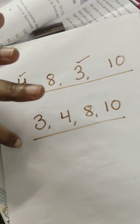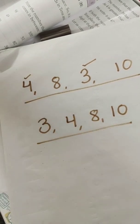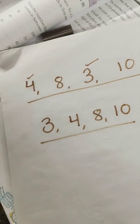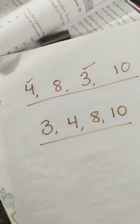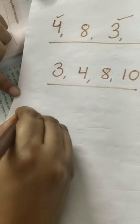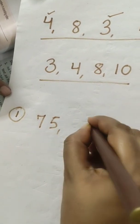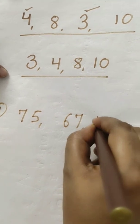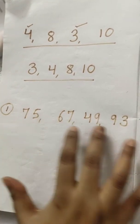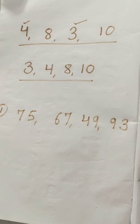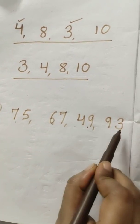We have done this type of arrangement in chapter 3 also. But in this chapter, chapter number 5, we are going to do it with bigger numbers. So just see what we are going to do. Suppose the first question has numbers 75, 67, 49, and 93. Such big numbers! But don't get scared. First, we will see which number is the smallest.